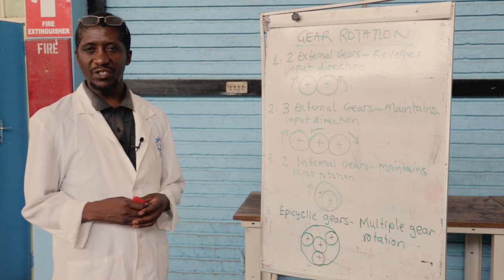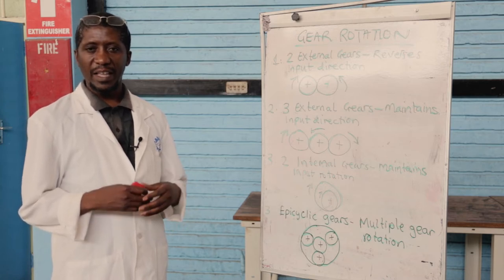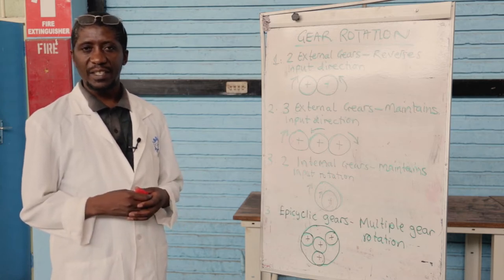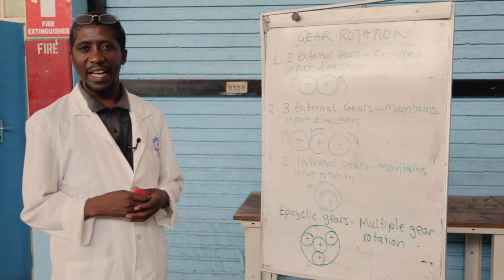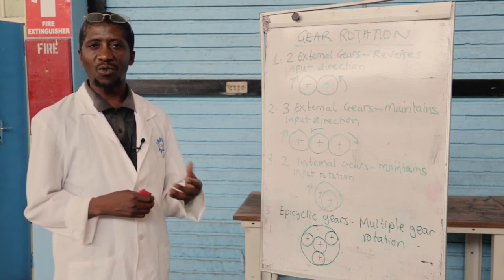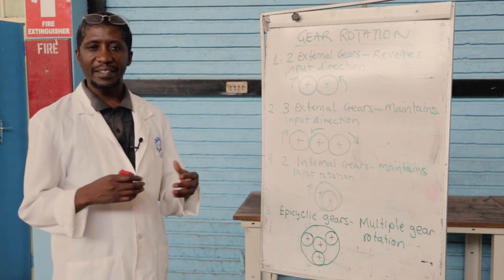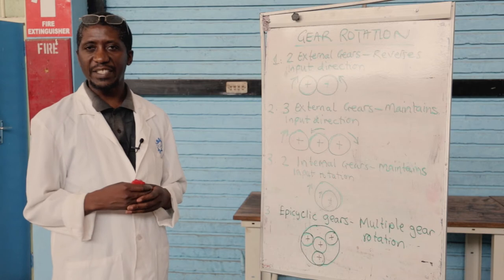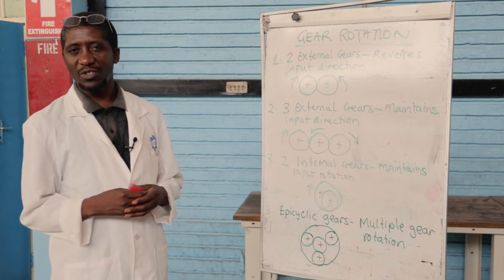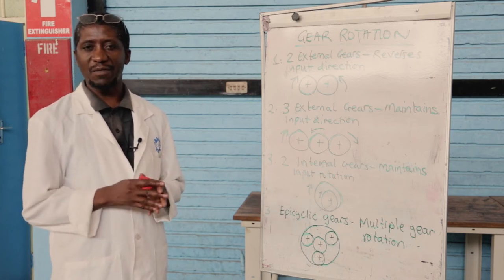When the engine is running, the engine rotates in a clockwise direction. Most of the engines that we have are clockwise rotated, meaning that the flywheel is rotating in a clockwise direction and power is available there.